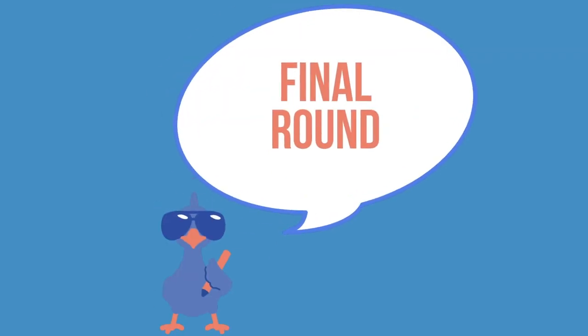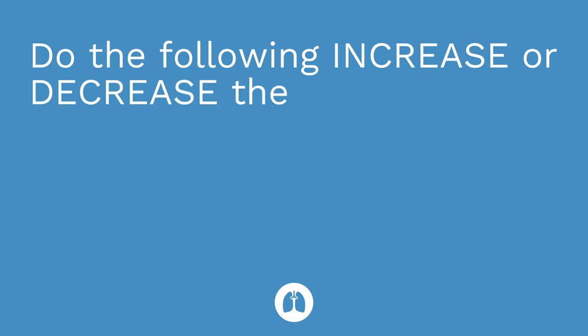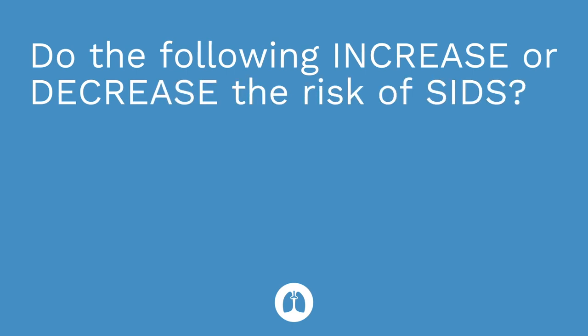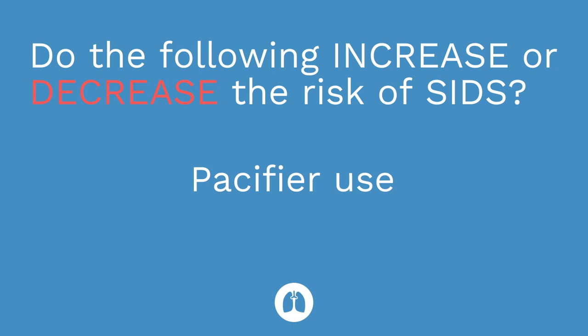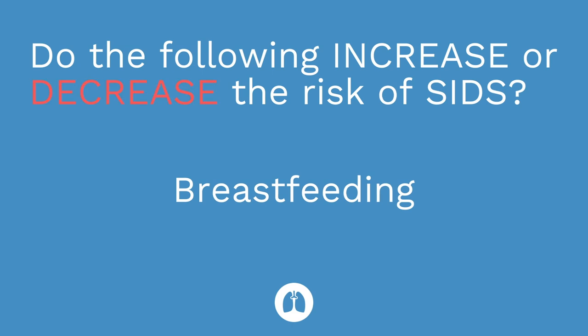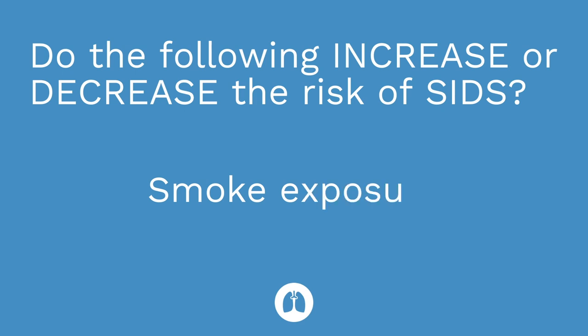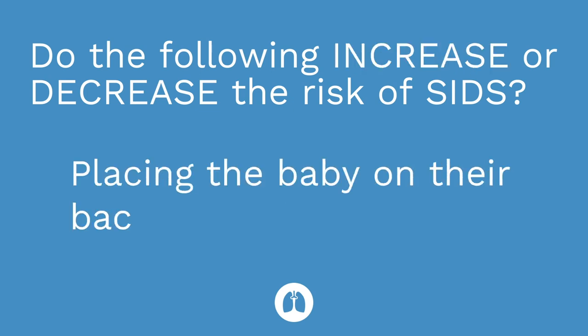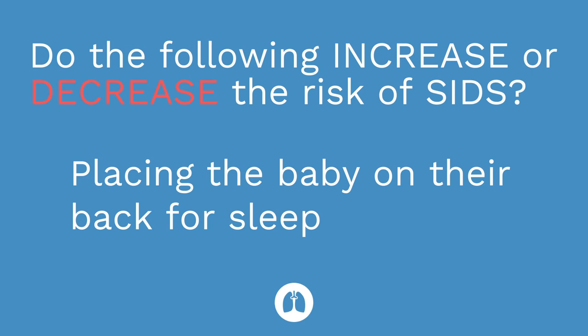I hope you did well with round one. During round two, I'll give you an item or factor and I want you to tell me whether it increases or decreases the risk for SIDS. Pacifier use — that decreases the risk of SIDS. Breastfeeding — that also decreases the risk of SIDS. Smoke exposure — that increases the risk for SIDS. Placing the baby on their back for sleep — that decreases the risk for SIDS. I hope this video was helpful. Take care and good luck with studying.